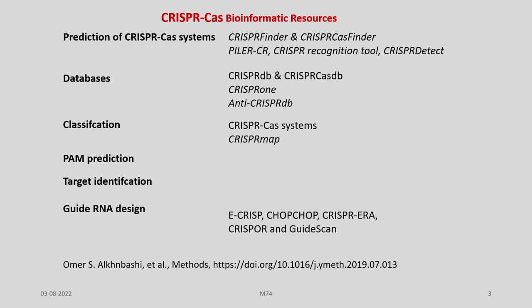We have many CRISPR-Cas9 bioinformatics resources developed, and each one of them serves different purposes. For example, in case of CRISPR-Cas9 system discovery or prediction, we have CRISPR-Finder, CRISPR-Cas finder, PilarCR, CRISPR recognition tool, CRISPR-detect, and so on.